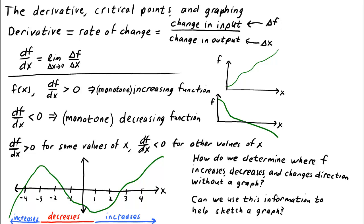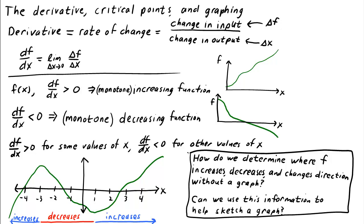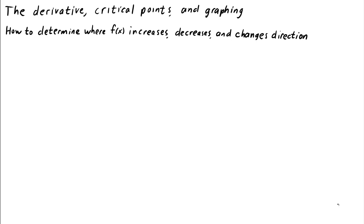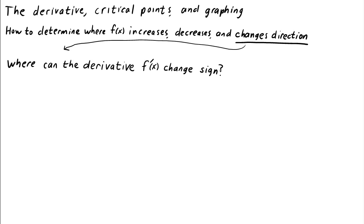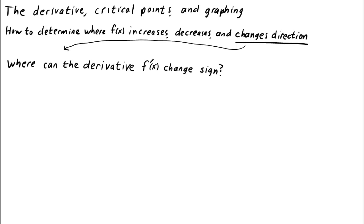In fact, we'll often want to go the reverse direction: use information about the derivative of a function to determine its behavior so that we can graph it. We'll accomplish this task by focusing on where the function f can change direction, i.e., where the derivative can change sign. If the derivative is changing continuously, then the only way for it to change sign is if it crosses through zero.